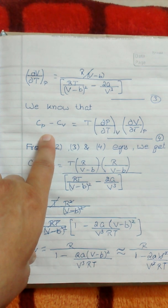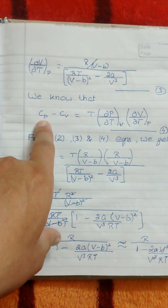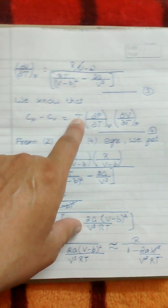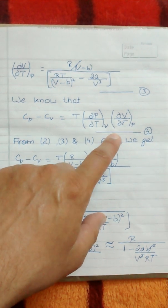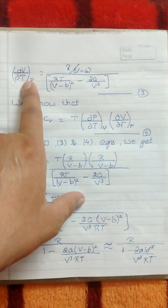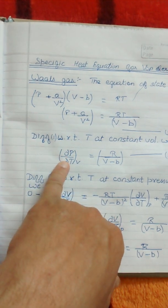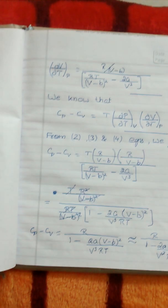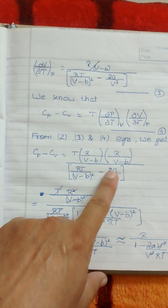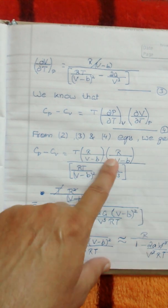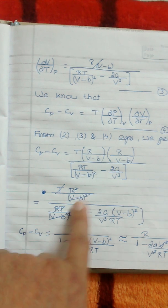We get the specific heat using the important formula: Cp minus Cv. Putting in these values — this is the fourth equation, the second and third equations — the specific heat at constant volume is substituted, and we get the result in terms of T, R squared, and (V minus b) squared.